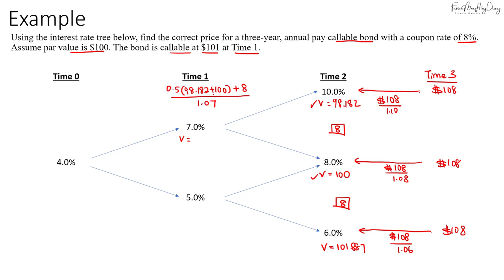We do the same thing for this node. Take 0.5, multiply by these two values—100 and 101.887—then add in the coupon, which is this coupon here. Discount it at 5%, which will give us $103.756.